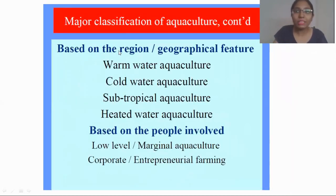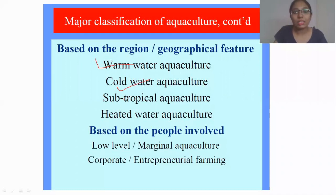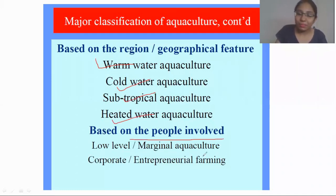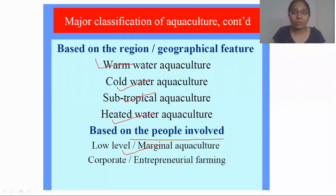Based on the region, aquaculture is classified as warm water aquaculture, cold water aquaculture, sub-tropical aquaculture, and heated water aquaculture. Based on the people involved, it is classified as low-level or marginal aquaculture, and corporate and preparatory farmers.